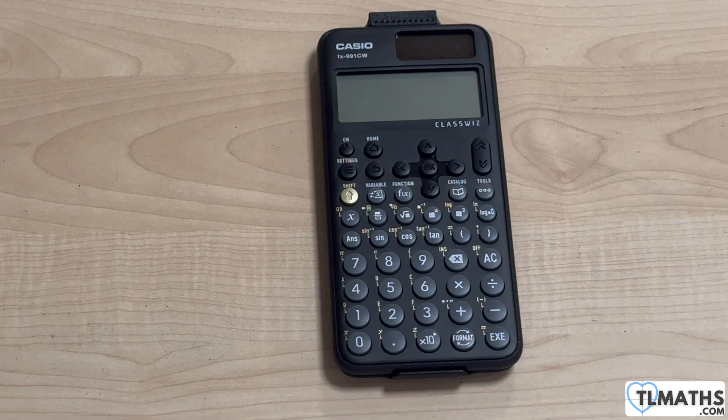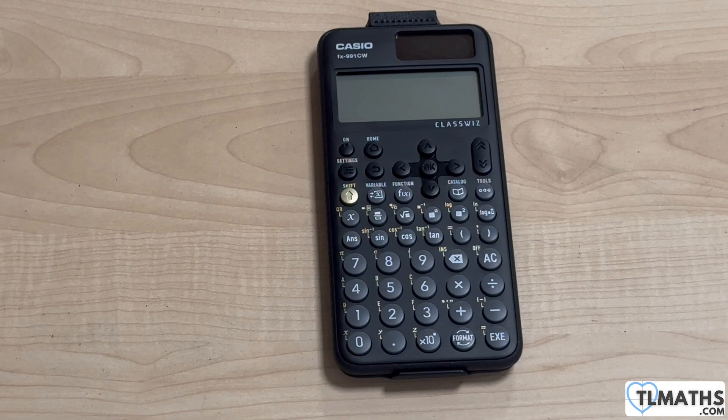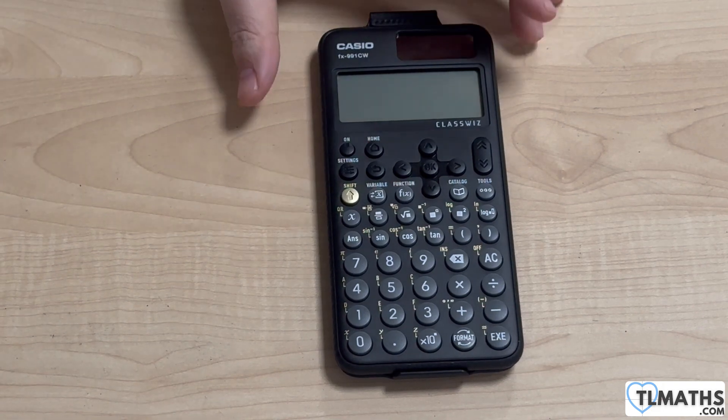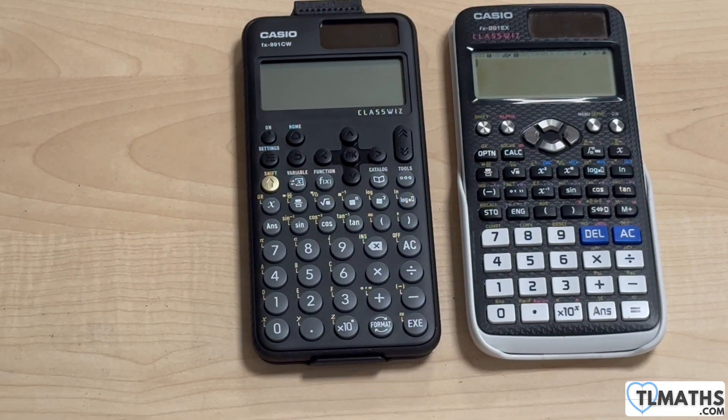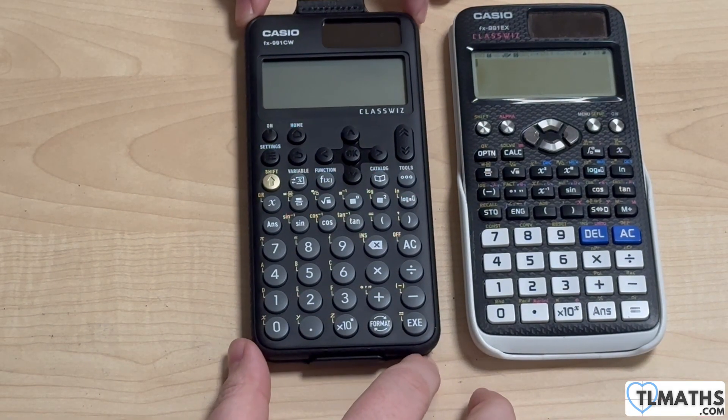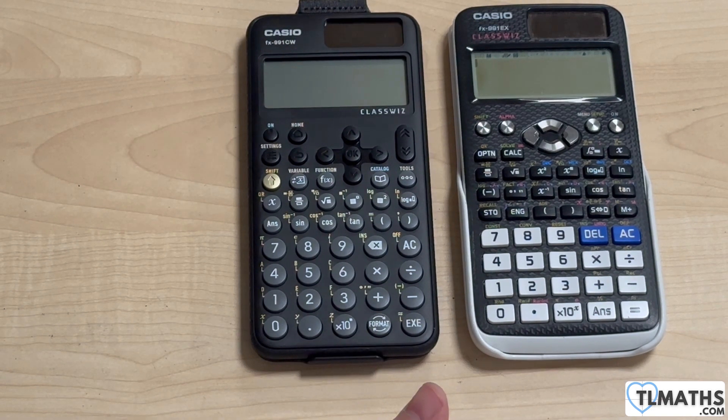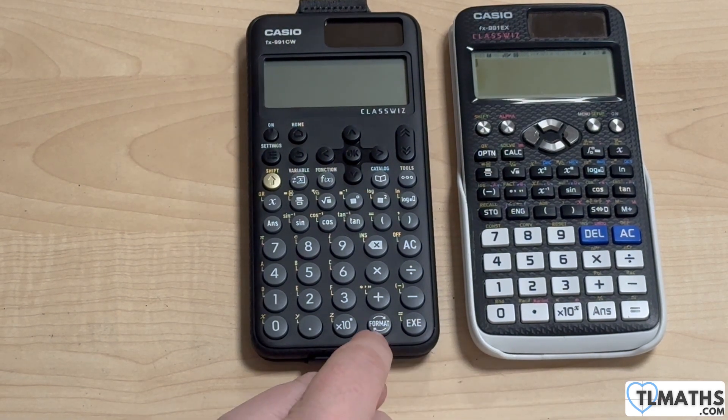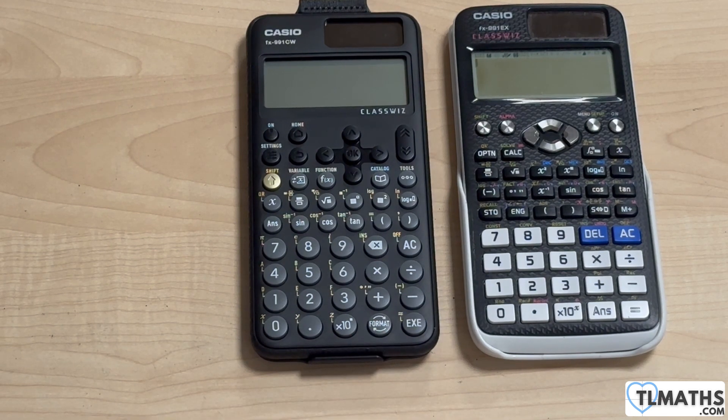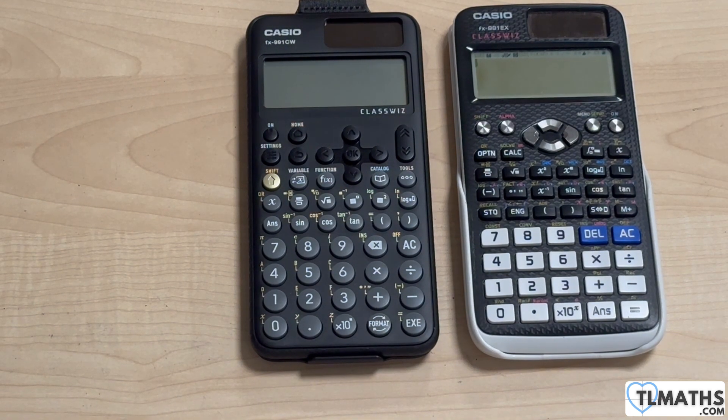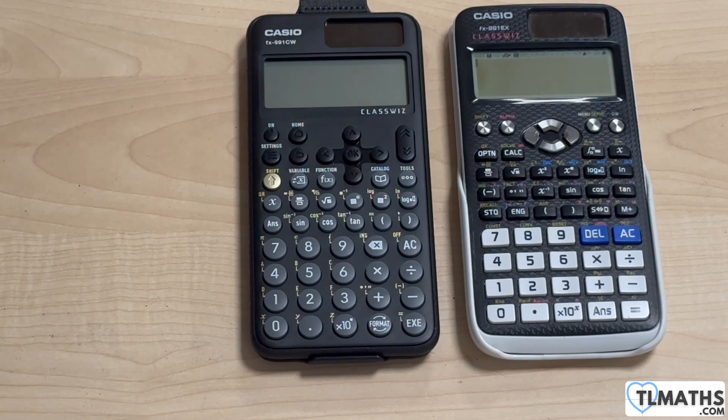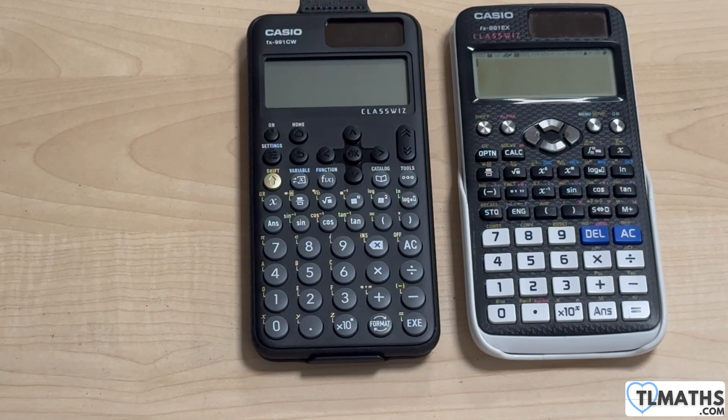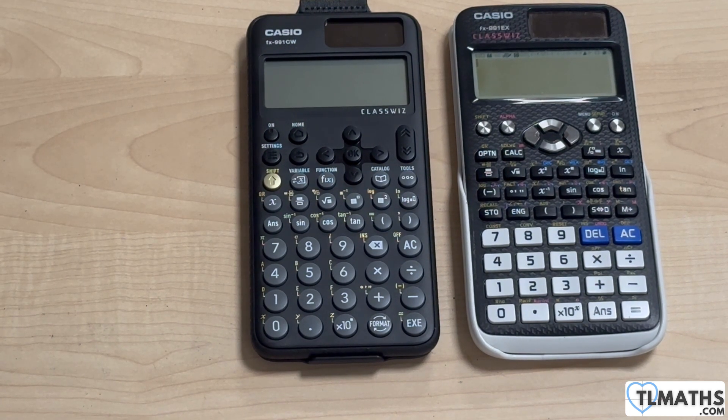So there's a couple of things I'm going to point out through my use of the ClassWiz today. Obviously as I said it's not a full in-depth review here. Let's just put the old Casio ClassWiz next to it just so that we have a comparison. The first thing I want to point out is the removal of the SD button and changing it to the format button. So I am going from decimals to fractions a lot in A-level maths. We focus a lot on working with improper fractions and working with those in our calculations.